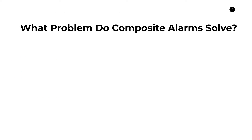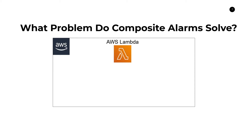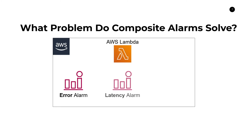Let's talk about this in terms of an example and discuss what problems composite alarms solve. Imagine we are building an application based on AWS Lambda and we want to monitor the health of our Lambda function to ensure we get notified whenever something is wrong. Traditionally, people create a couple of key alarms — the first based on errors, triggering when errors are elevated as a percentage of total invocations. The second is latency: when latencies are elevated we also want a notification, as that may indicate a problem with the application or a dependency it relies on.